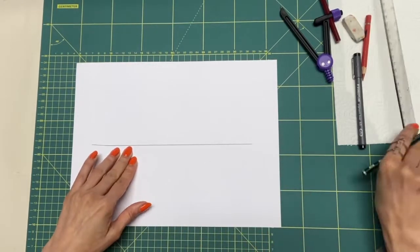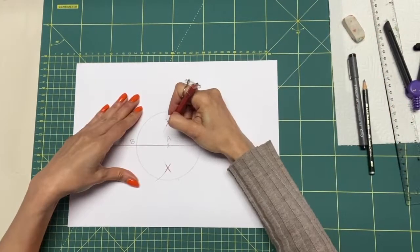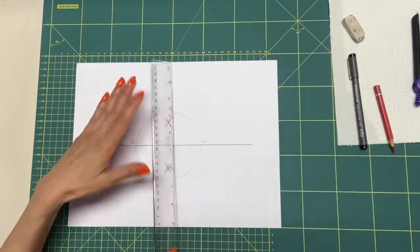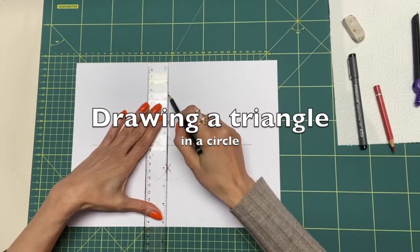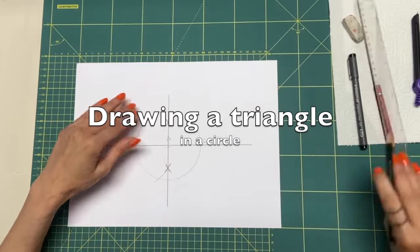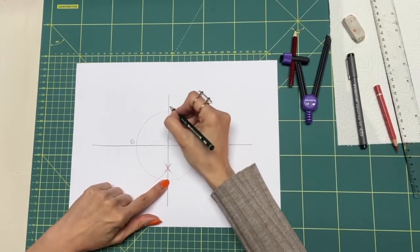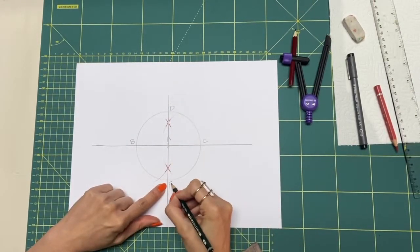Let's go to the next lesson, drawing a triangle. We start with a straight horizontal line and divide the circle in four parts.